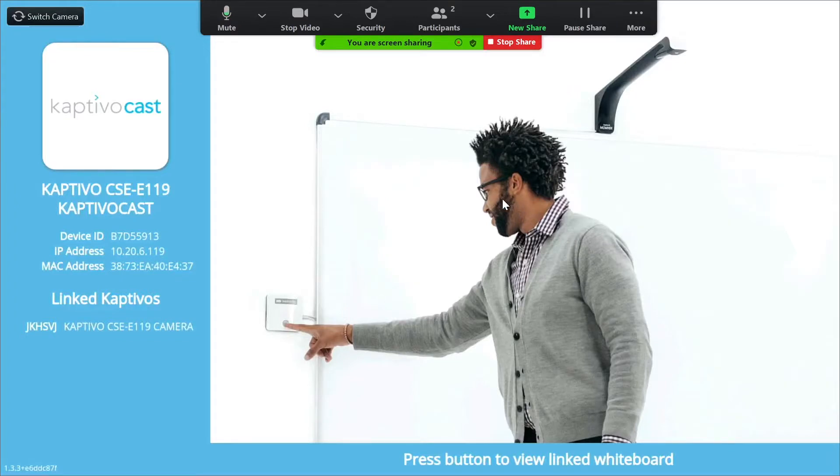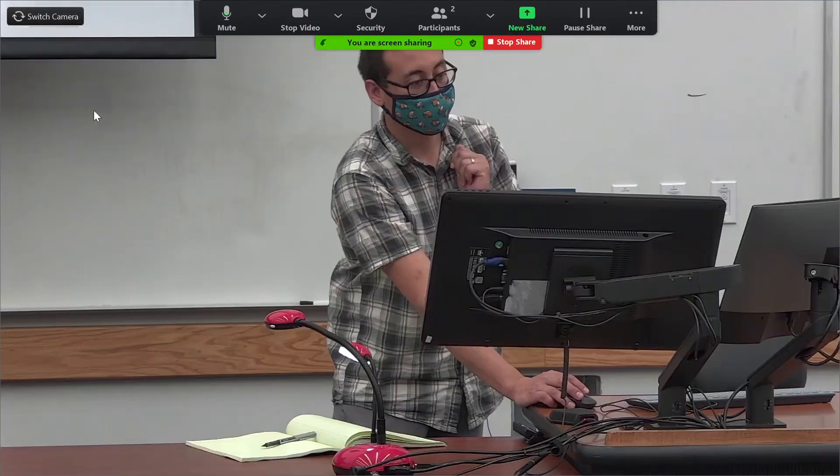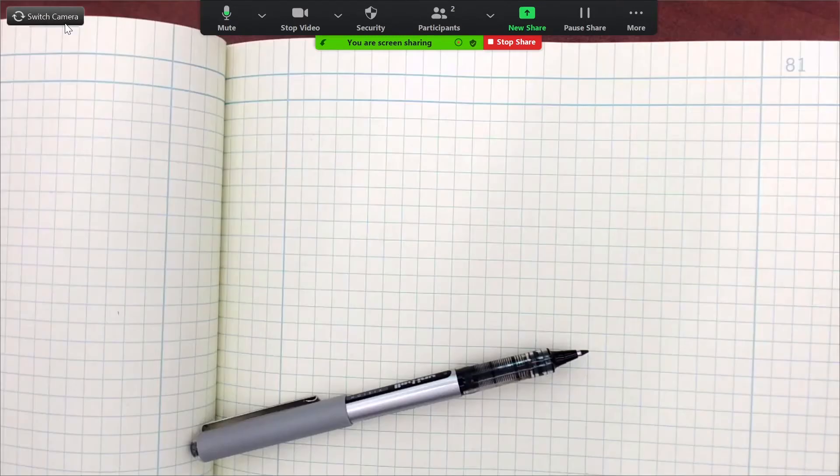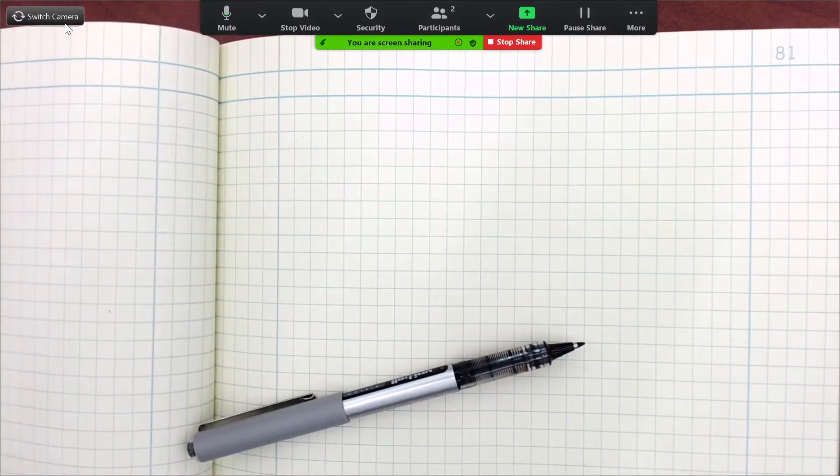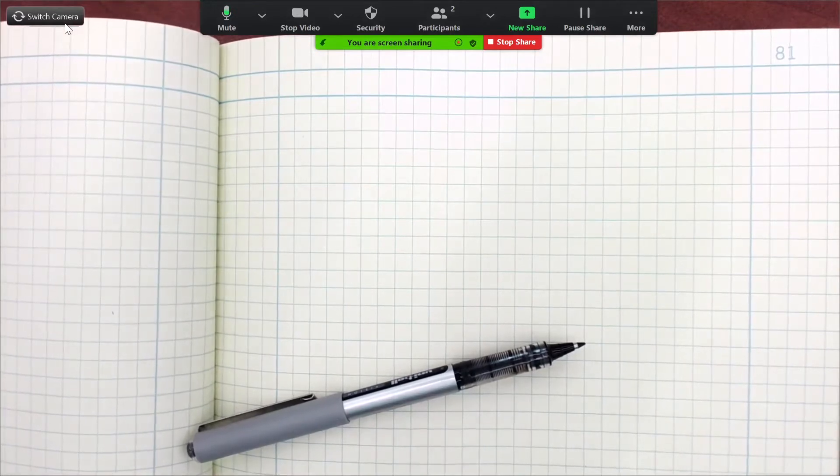After that, if there's more than one camera in the classroom, you may need to switch camera using this switch camera button in the top left hand corner until the view from the document camera is shared to both learners in Zoom and to everyone else in the classroom on the projector.